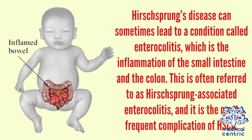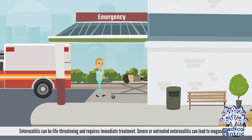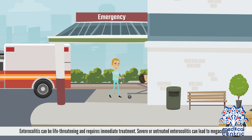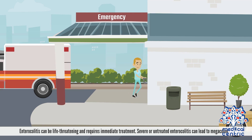Hirschsprung's disease can sometimes lead to a condition called enterocolitis, which is the inflammation of the small intestine and the colon. This is often referred to as Hirschsprung-associated enterocolitis and is the most frequent complication of HSCR. Enterocolitis can be life-threatening and requires immediate treatment. Severe or untreated enterocolitis can lead to megacolon.